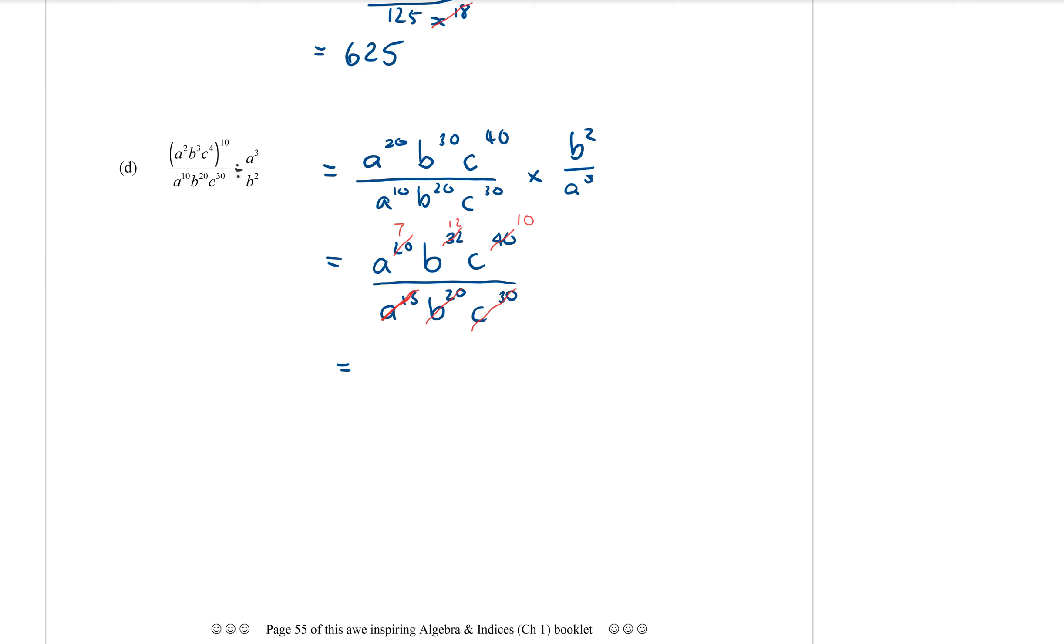I have A to the power of 7, B to the power of 12, and C to the power of 10 on the top. Everything on the bottom has cancelled off. So it is the same as putting it all over one, but you don't need to write it. If everything's cancelled off, you just leave it like that. Okay? That is it.